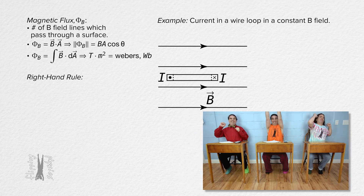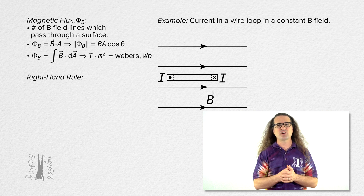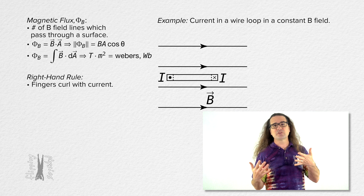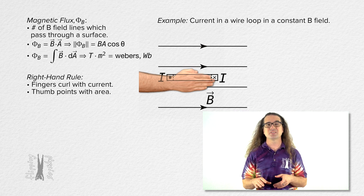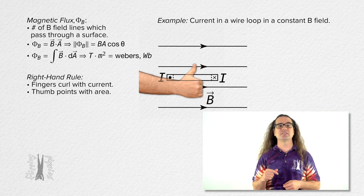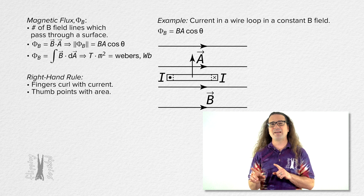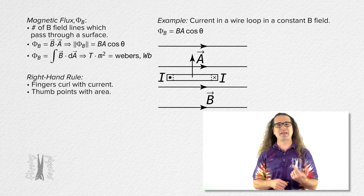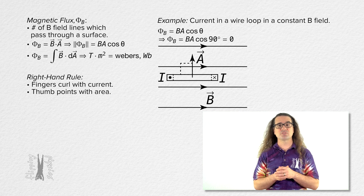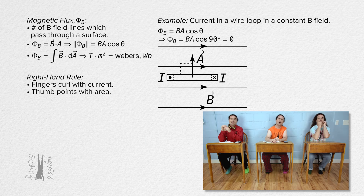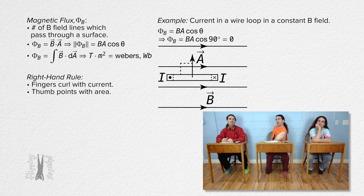Don't be too cool — limber up and find your right hand. The right hand rule to find the direction of the area vector corresponding to a loop that carries current is similar to the right hand rule for angular velocity. Fingers curl in the direction we choose for positive current in the loop, and the thumb points in the direction of the area vector. In this example, the area vector is up towards the top of the screen. The angle between the magnetic field and the area vector is 90 degrees. The cosine of 90 degrees is zero. Therefore, the magnetic flux through this loop is zero — which makes sense because the plane of the loop is parallel to the magnetic field, so zero magnetic field lines pass through the loop.